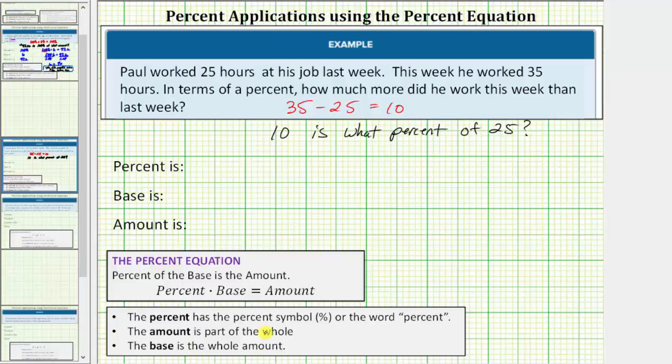So because the question reads '10 is what percent of 25', we can think of this as '10 is what part of 25', and therefore 10 is part of the whole, or the amount, and 25 is the whole amount, or the base, and the percent is the unknown.